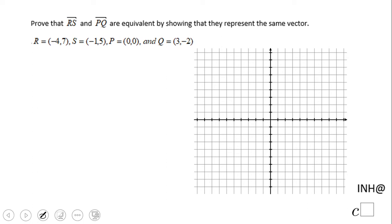Welcome back to Math at C squared. In this example, we're looking at vectors. We have two vectors given in ordered pair format: vector RS and vector PQ.